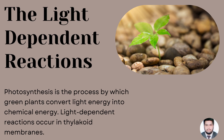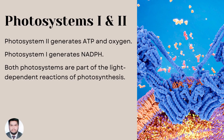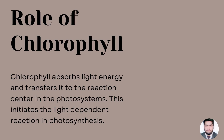Photosynthesis is the process by which green plants convert light energy into chemical energy. Light dependent reactions occur in thylakoid membranes. Photosystem two generates ATP and oxygen, while photosystem one generates NADPH. Both photosystems are part of the light dependent reactions of photosynthesis.